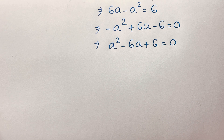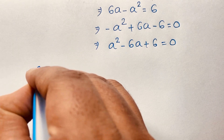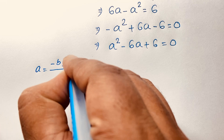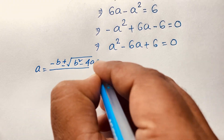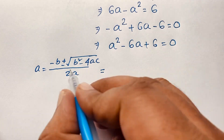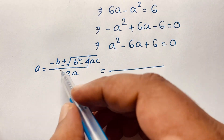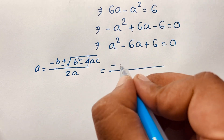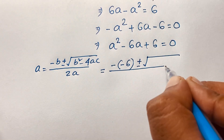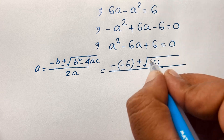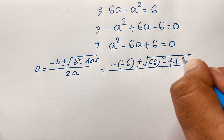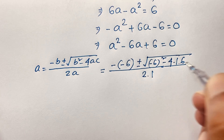Here A is equal to 1. Using the quadratic formula: A equals negative B plus or minus square root of B squared minus 4AC, all over 2A. According to this formula, A equals negative B — and B is negative 6 — plus or minus square root of negative 6 squared minus 4 times A times C, where A is 1 and C is 6, over 2A where A is 1.